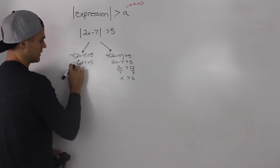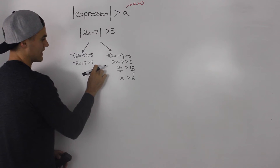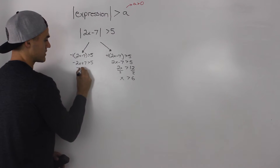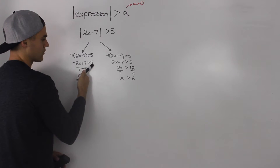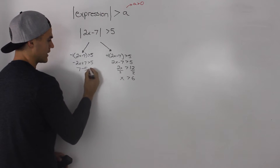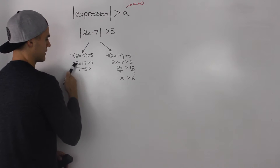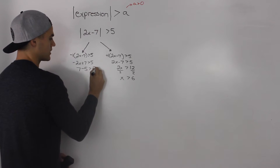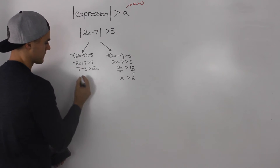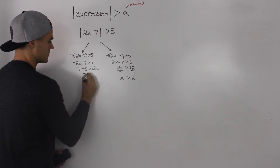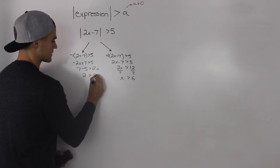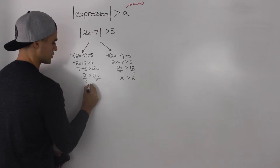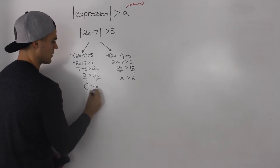I prefer to bring the variable parts over to where they'll be positive. So bring the negative 2x to the right side and bring the 5 to the left side. We'd have 7 minus 5 greater than 2x, and that becomes 2 greater than 2x. Divide both sides by 2, so another solution is when x is less than 1.